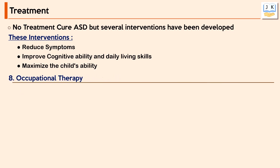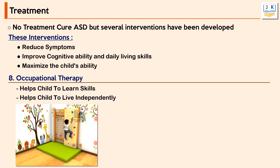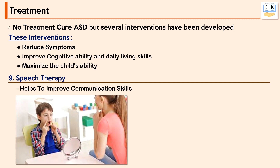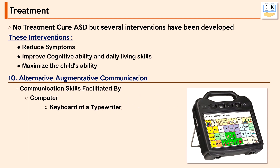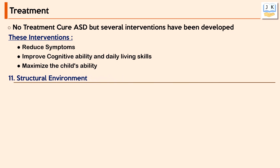Occupational therapy helps the child learn life skills like feeding and dressing themselves, bathing, and understanding how to relate to other people, aiming for maximum independence. Speech therapy helps improve the person's communication skills — some people learn verbal communication, while others use gestures or picture boards. Alternative Augmentative Communication (AAC) uses computers, keyboards, typewriters, or low- and high-tech communication boards to facilitate communicating skills, which also helps reduce behavior problems.